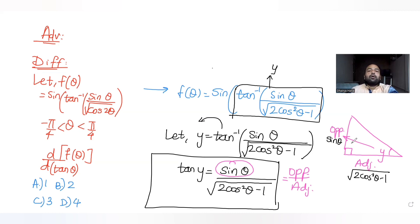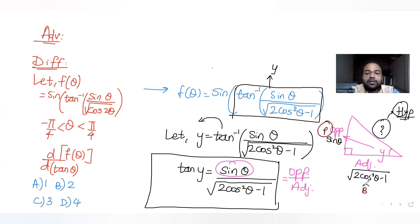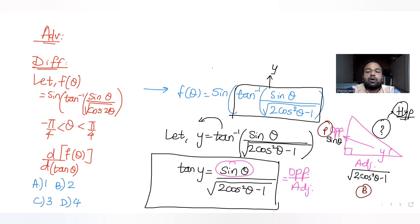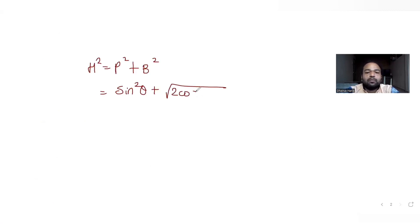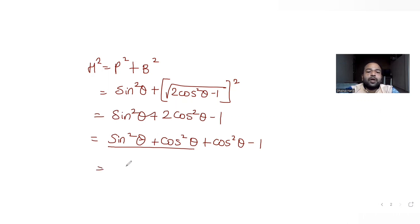Now applying Pythagoras theorem since it is a right angle triangle, hypotenuse² = perpendicular² + base². Perpendicular is sinθ, so perpendicular² = sin²θ. Base is root of 2cos²θ − 1, so base² = 2cos²θ − 1. Adding them: sin²θ + 2cos²θ − 1 = sin²θ + cos²θ + cos²θ − 1. Using the identity sin²θ + cos²θ = 1, this simplifies to cos²θ.